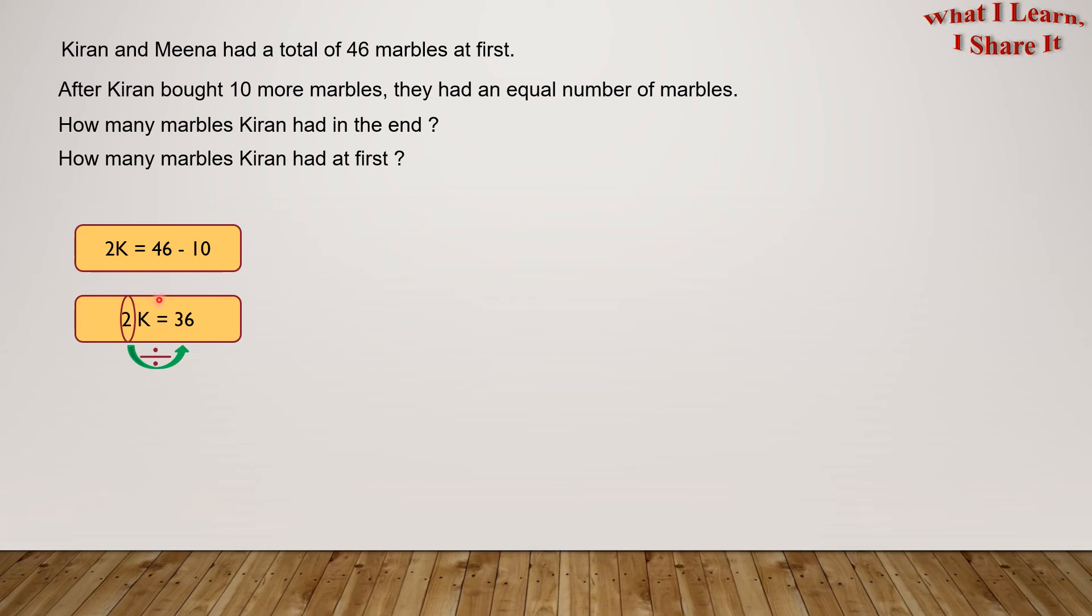In order to separate out K, we need to take the 2 to the other side. And since 2 is in a relation with multiplication with K, when we take it to the other side, it'll become division. So we get K equals 36 divided by 2. This will give us K equals 18.